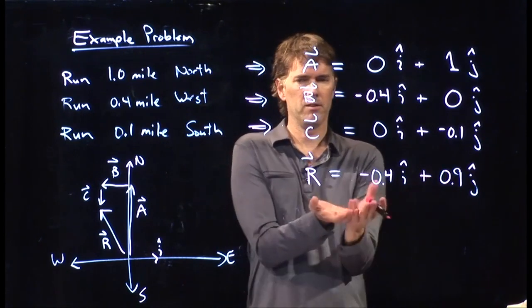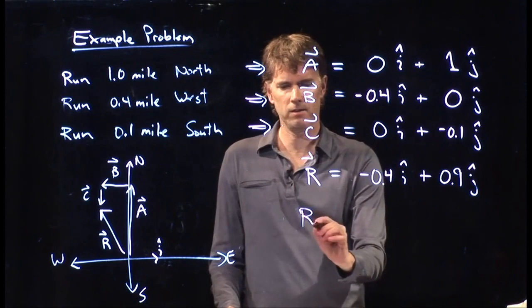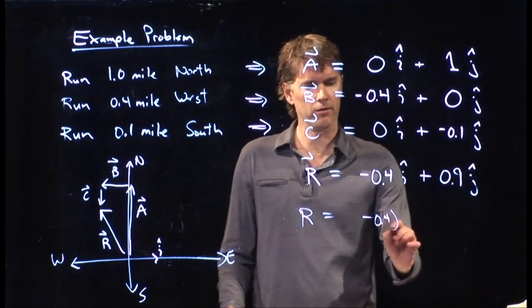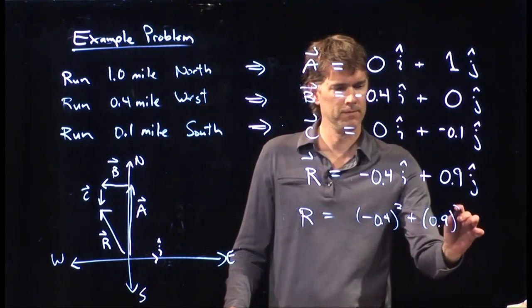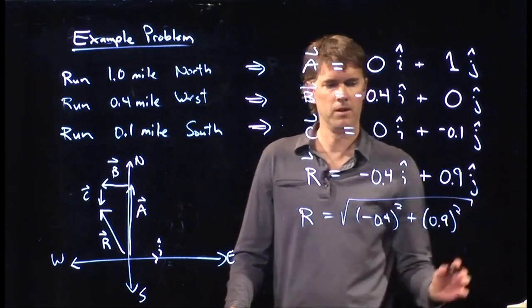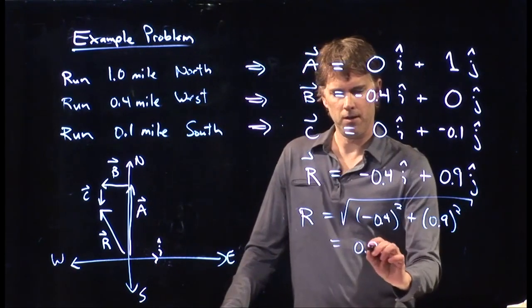And now you're essentially done. Once you know the vector, you essentially know everything about the vector, right? Calculating the magnitude is just a matter of squaring the first term, squaring the second term, and taking the square root. And we already did this. We know what the answer is. It's 0.98.